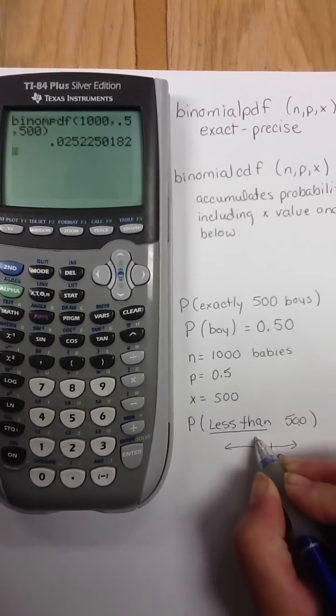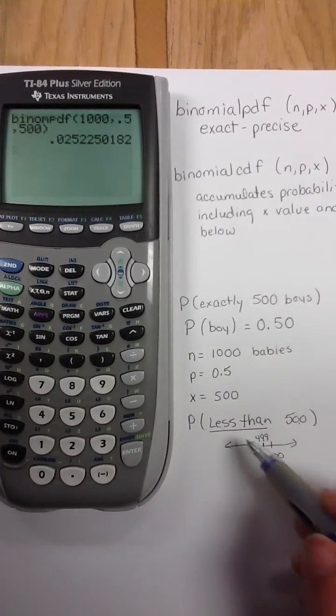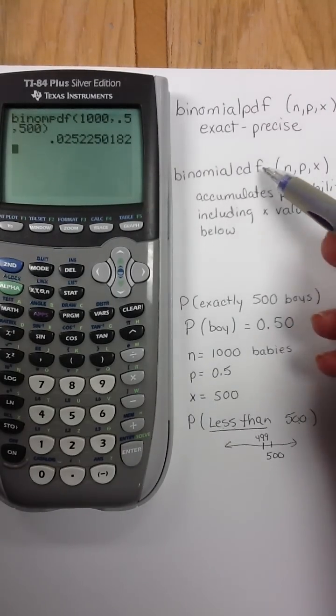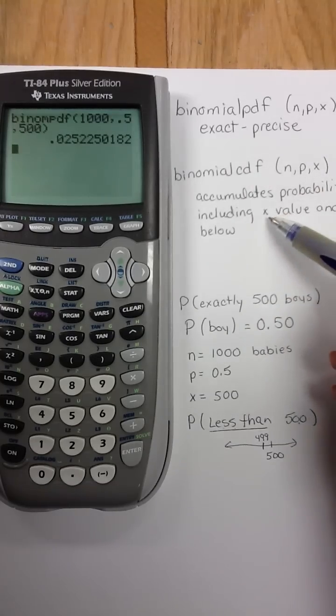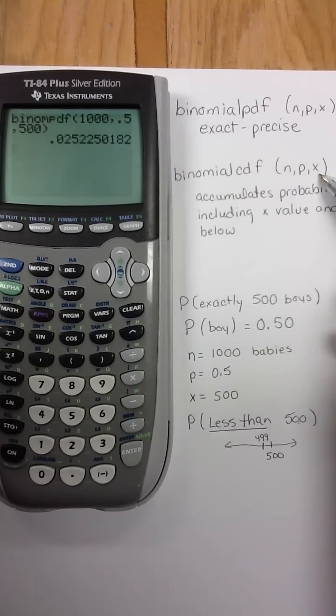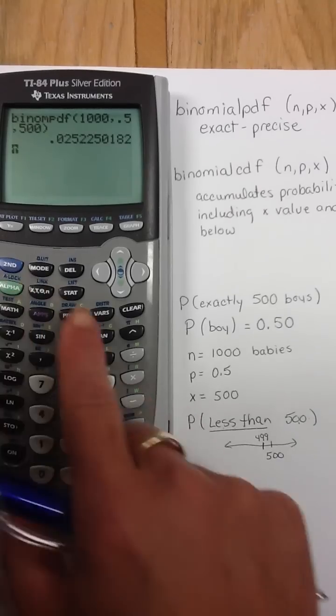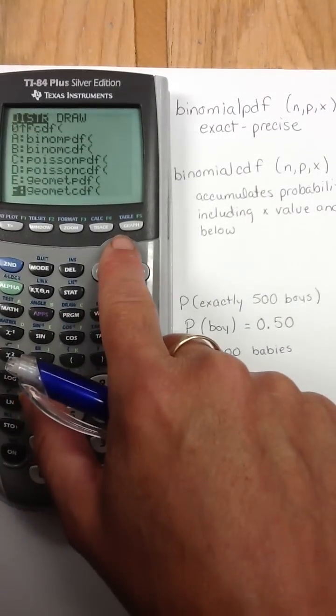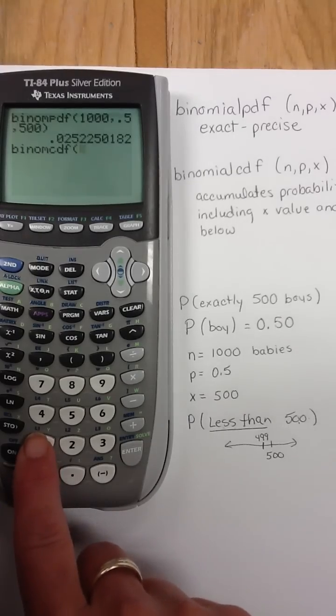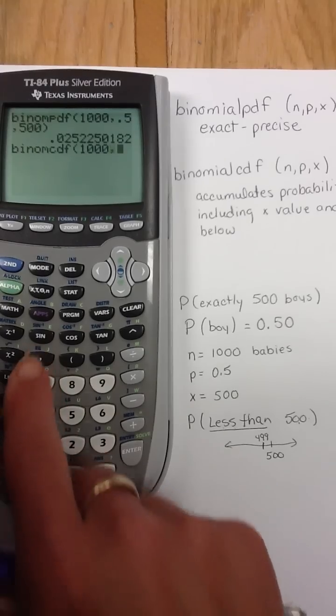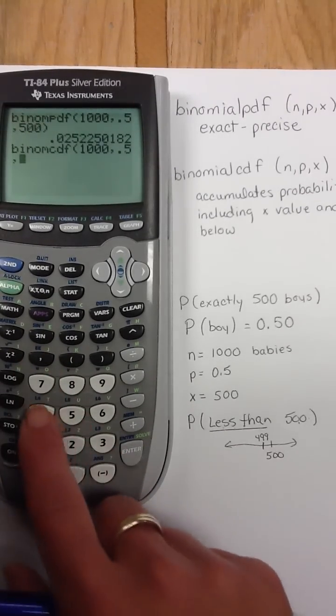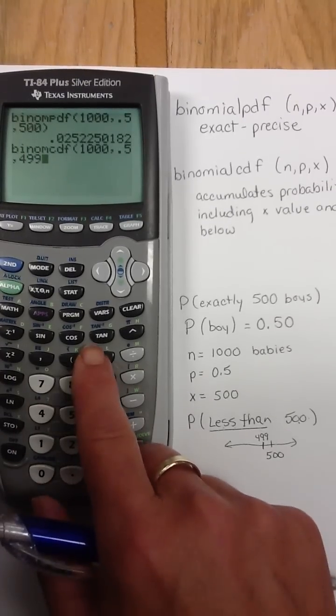If I'm accumulating anything less than 500, I'm going to use my cumulative function, and I don't want to include 500, so I actually have to go down to 499. So, I'm going to go to the distributions, arrow to the cumulative function. We're still going with 1,000 babies, probability of 0.5, but now we want less than 500, so we're putting in 499 and below.